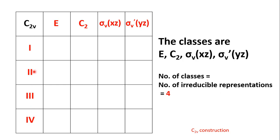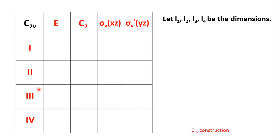We will later name these irreducible representations following Mulliken notation. Let L1, L2, L3, and L4 be the dimensions. Dimensions are the numbers presented in the column under class E. Dimensions take only three values: 1, 2, and 3.